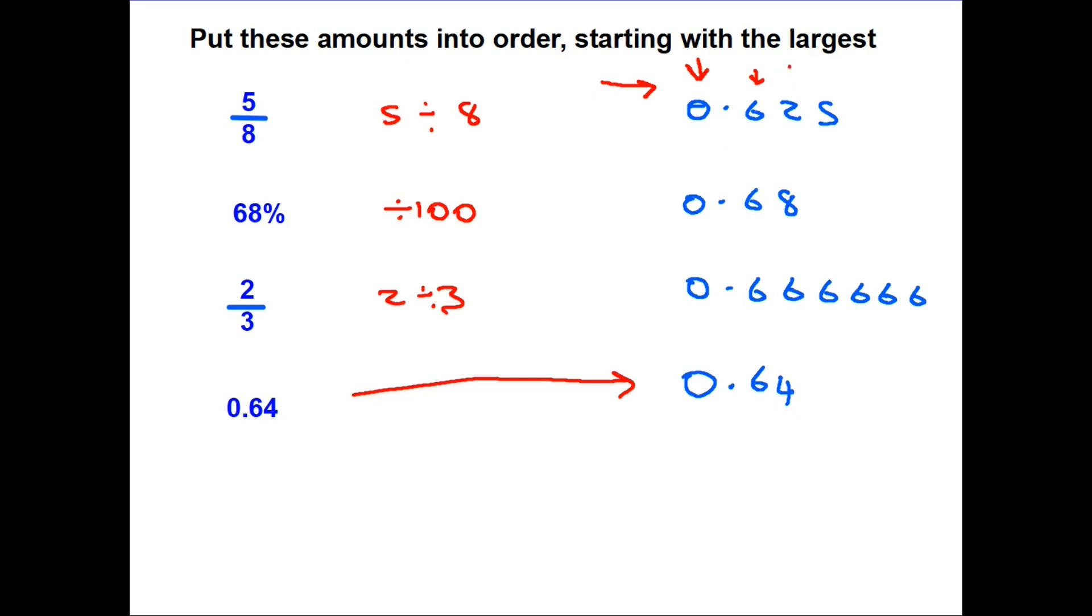What do we have? A 2, a 4, a 6, and an 8. Eight is the biggest number, therefore 68% is the largest of the four. Looking at the others—a 2, a 6, and a 4—6 is the biggest, so 2/3 must be the second largest. Of the remaining two, we've got a 2 and a 4. Four is the largest, so that must be third.